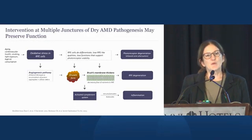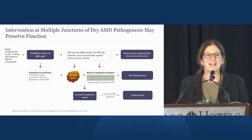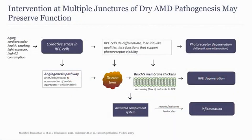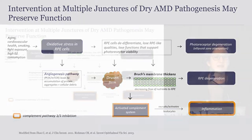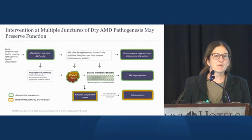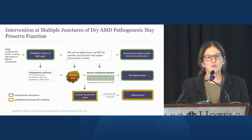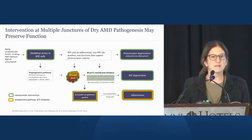When we think about the very complicated pathology of dry AMD, we're all thrilled to see approaches that treat this disease targeting complement, which comes in at the tail end of the pathological cascade. But targeting mitochondrial dysfunction allows us to intervene at multiple points in this pathway, and we have preclinical and now clinical data to support this intervention.